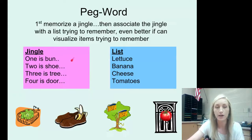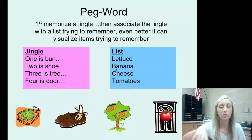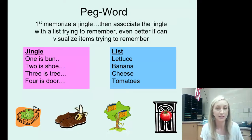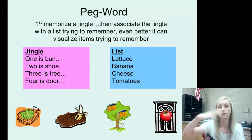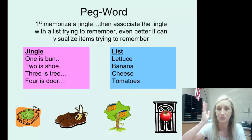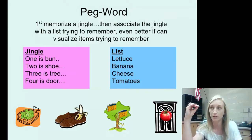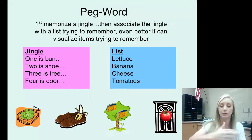So you put lettuce on a bun. You visually put a banana inserted into a shoe. It doesn't make a whole lot of sense, but because you're visualizing it, it will work. You put cheese in a tree and a tomato on your door — maybe you throw the tomato at your door. When you say 'one is bun,' you ask yourself what did I put on the bun? Oh, I put lettuce. What did I put in the shoe? A banana. It'll help you retrieve that information.